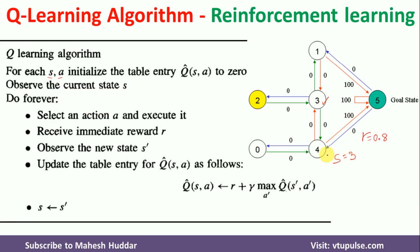Being in current state 3, I need to perform the algorithm steps until reaching the goal. From state 3, the available actions are 2 (go to state 2), 1 (go to state 1), and 4 (go to state 4). Randomly, I will select action 1. Performing action 1 moves me to state 1, and the immediate reward is 0. So R = 0 and S' = 1.